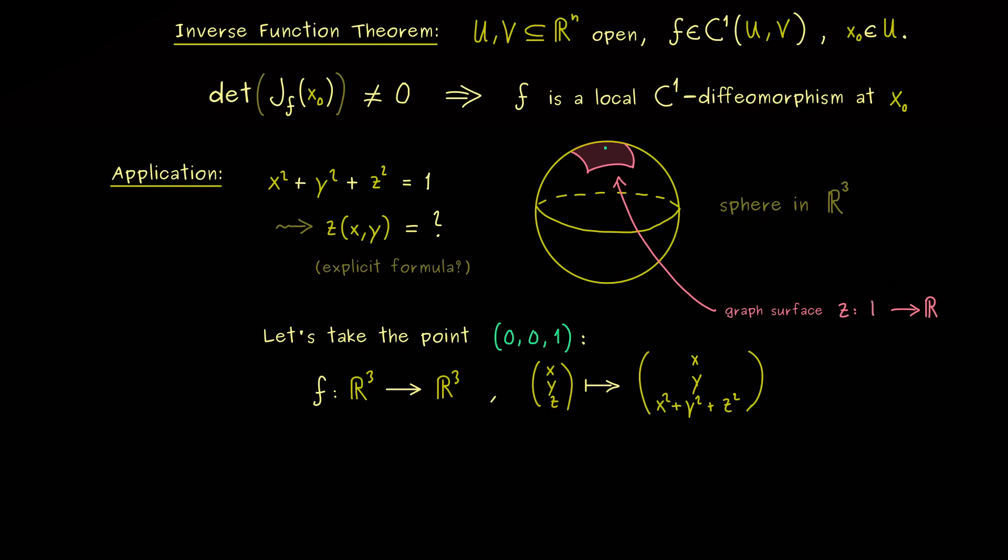And to say it more precisely, the domain of z would be just a subset in R². Okay, so this is the picture. And to get it, we have to satisfy the assumption of the inverse function theorem. This means we have to calculate the Jacobian and check the determinant at our north pole.